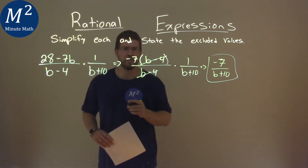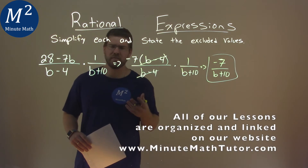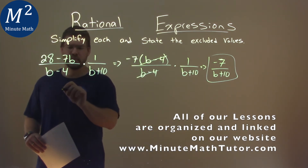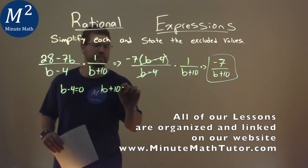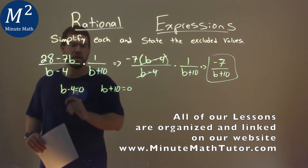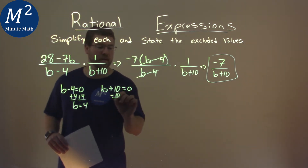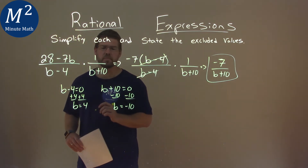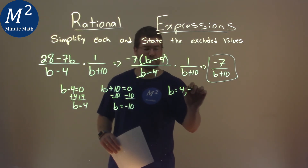But we need to find the excluded values, and that is when our denominator is equal to 0, because we can't divide by 0. So let's go set our denominators equal to 0. b minus 4 equals 0, and b plus 10 equals 0. And let's solve. Add a 4 to both sides, and b equals positive 4. Subtract the 10 from both sides, and b equals negative 10.